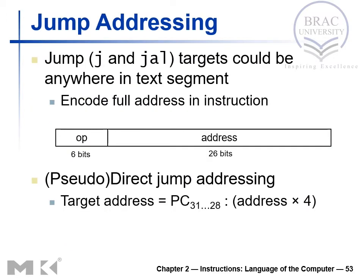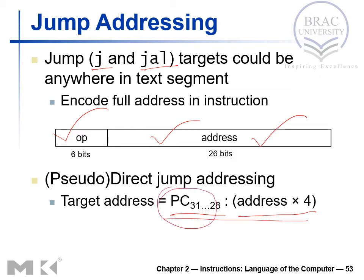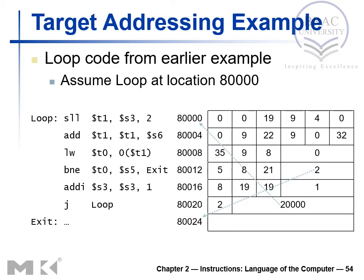For jump addressing, J and JAL are J-type instructions. The instruction has an opcode and a 26-bit address field. To calculate the target address, the four MSB bits come from the program counter and the remaining 28 bits come from the 26-bit field shifted left by 2. These are concatenated to generate the full 32-bit memory address for J-type instructions.